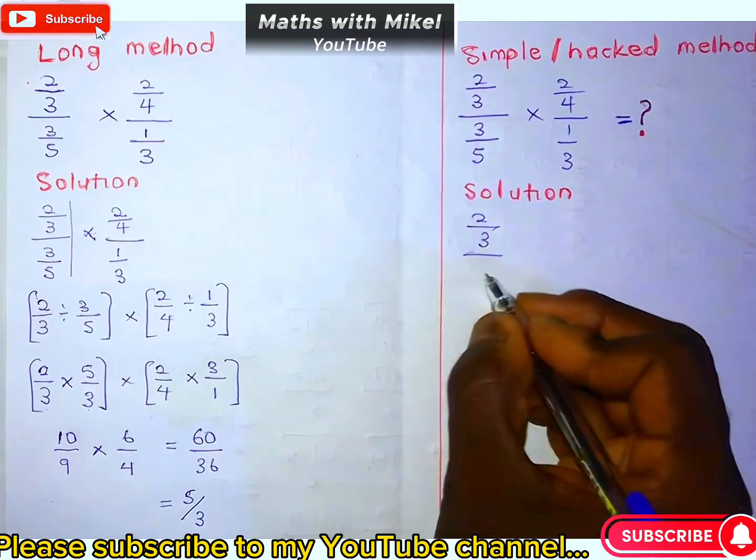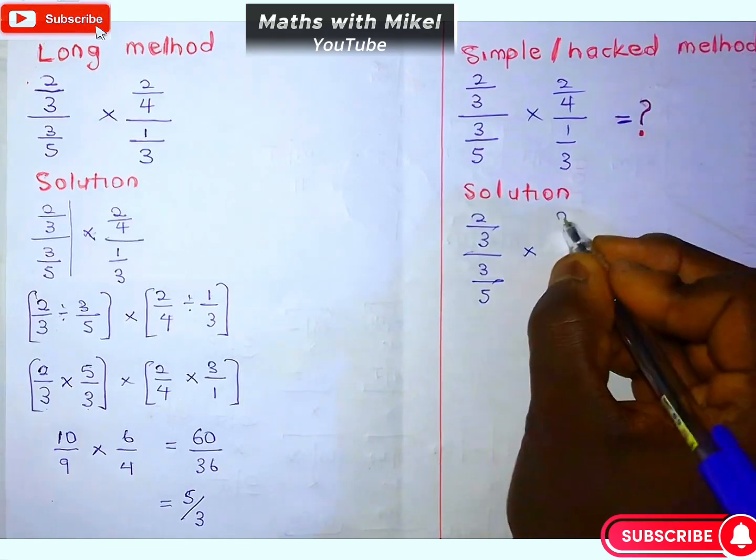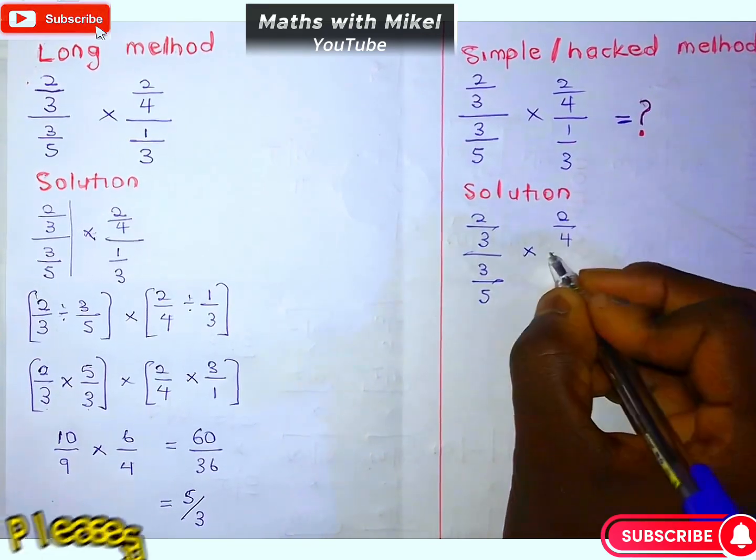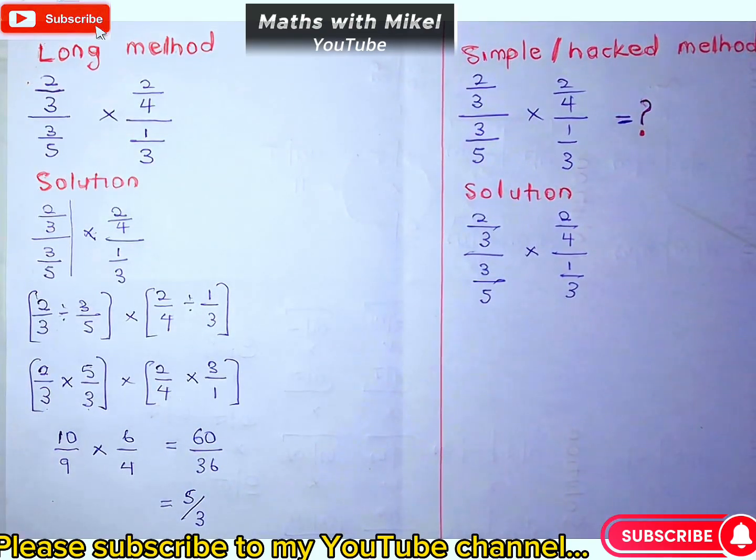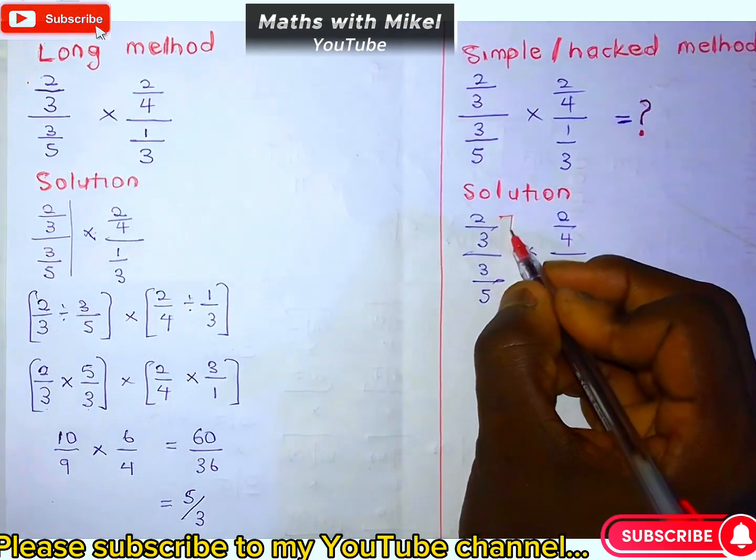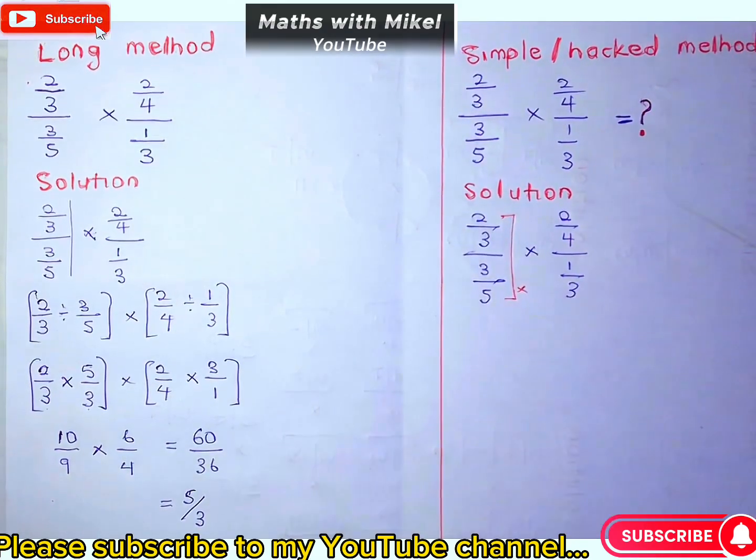2 over 3 divided by 3 over 5, times 2 over 4 divided by 1 over 3. What you do is multiply the first numerator by the last denominator—that's 2 times 5, which equals 10.